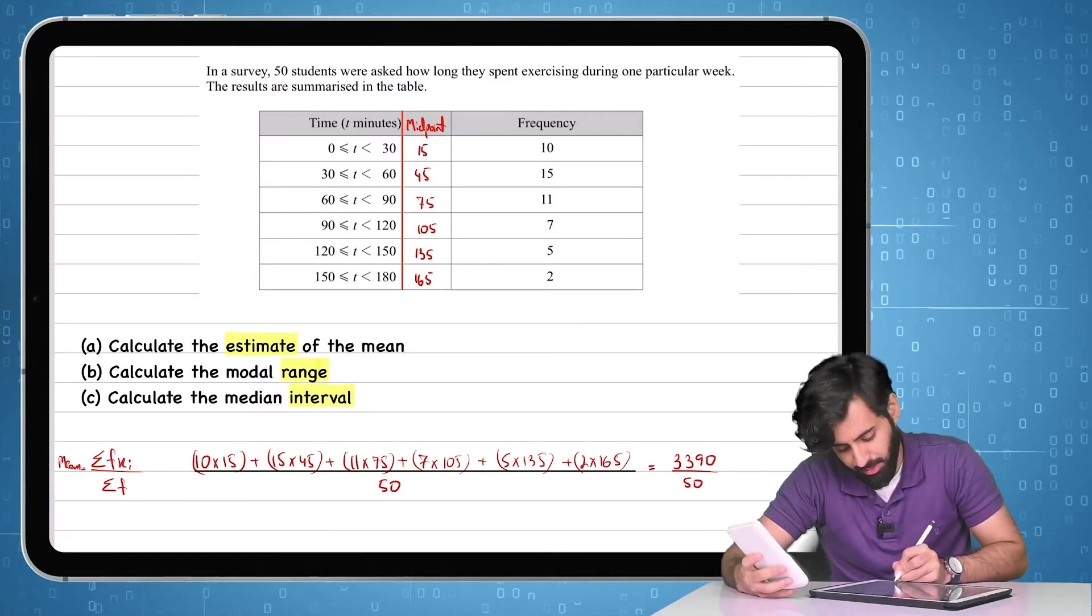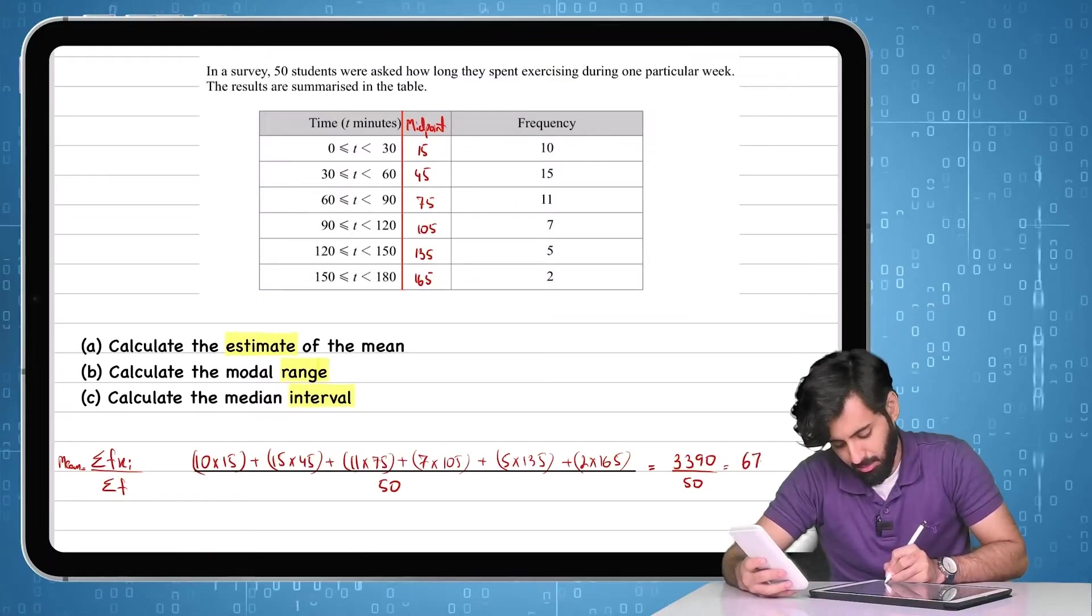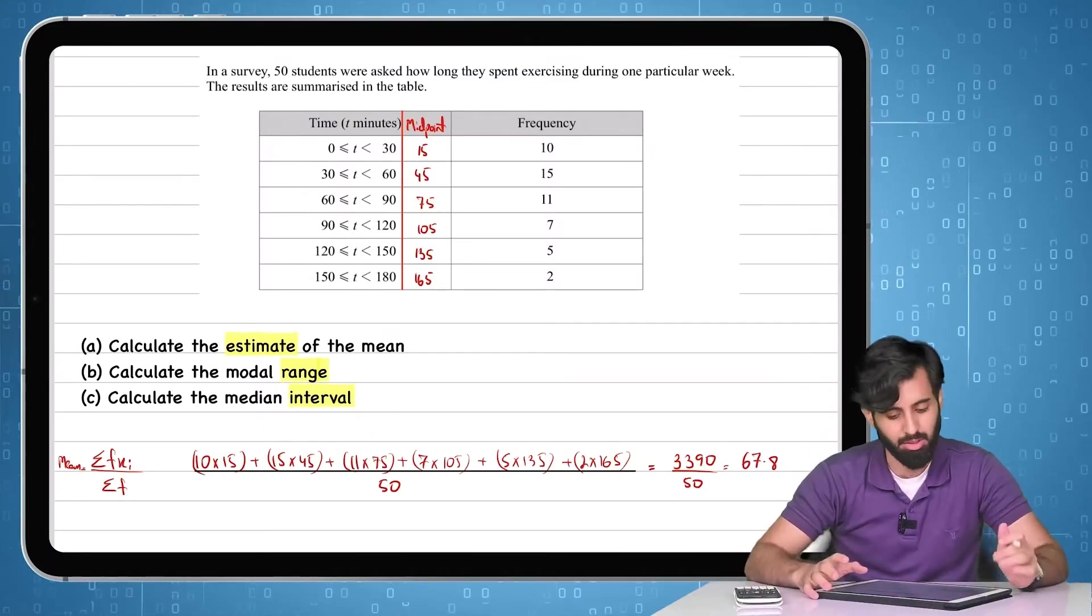So that gives me 3390. Let's divide this by the total frequency, which is 50. So that gives me 67.8, which is the estimate of the mean of this data set.